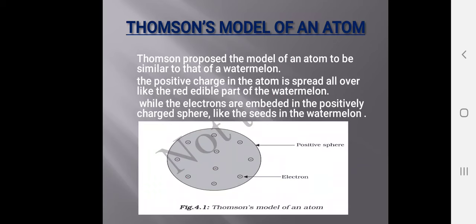We have different models of an atom in this chapter. Initially we will discuss the Thomson model of an atom. Thomson proposed the model of an atom to be similar to that of a watermelon. The positive charge in an atom is spread all over like the red edible part of the watermelon, while the electrons are embedded in the positively charged sphere like seeds embedded in the watermelon. You can see the picture — he compared the red edible part with the positive sphere and the seeds with the electrons.